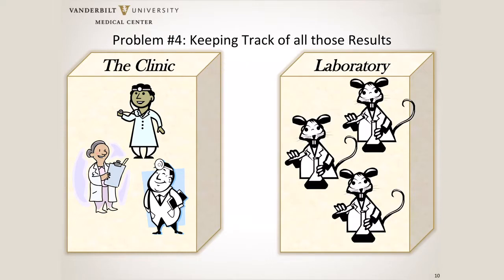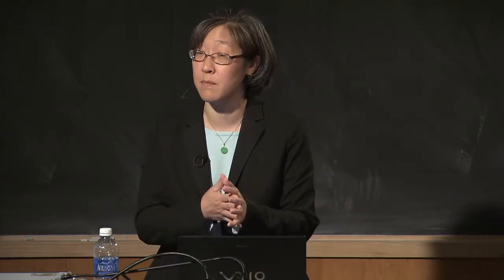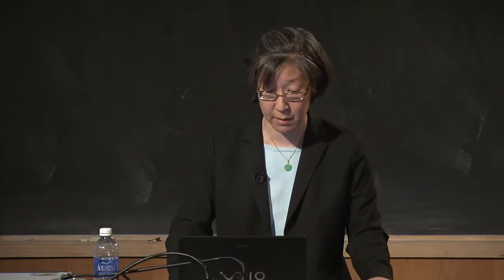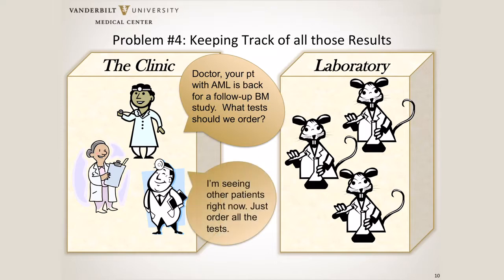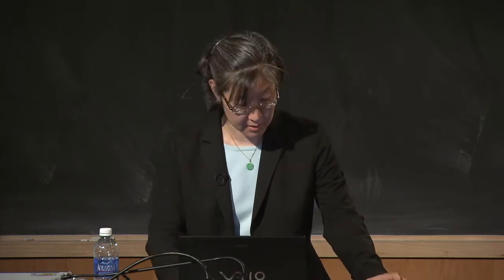There's the whole added problem of keeping track of results. We see these patients over and over again in hematopathology — very different from surgical pathology where you see the resection once. The patient comes back, the doctor is running from room to room, and the nurse practitioner asks what to order. The clinician says, 'I am in the middle of 10 other things right now. Just order everything.' He can't remember which tests he ordered the first time or which ones were positive. This is actually verbatim from one of my clinical colleagues.